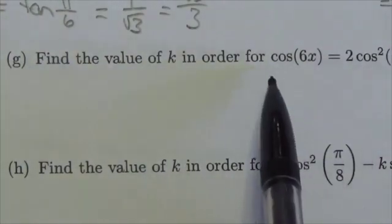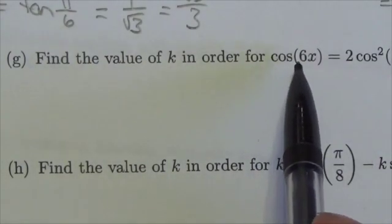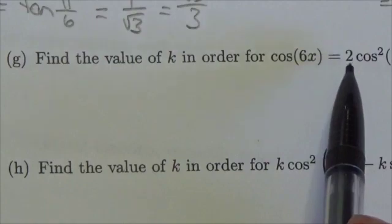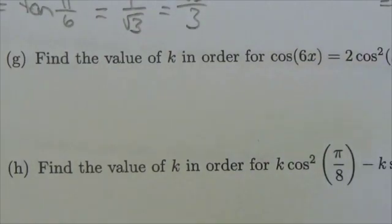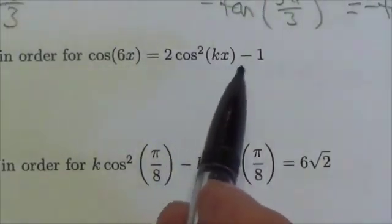It says, find the value of k in order for cos(6x) to be equal to 2 times the cosine squared of kx minus 1.